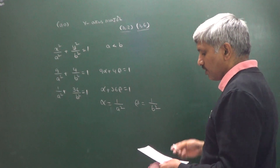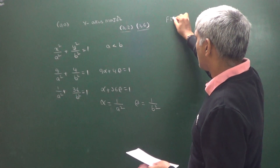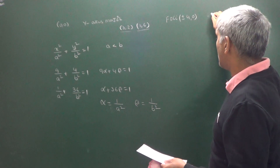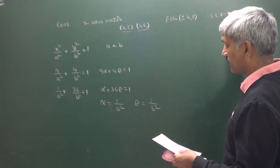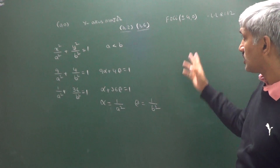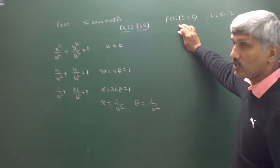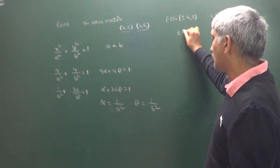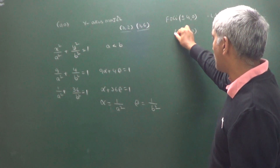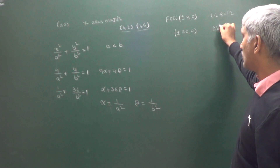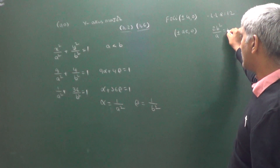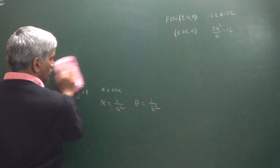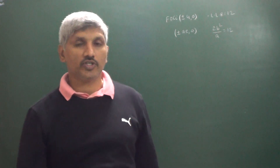The next question asks to find the equation of a hyperbola with foci at (±4, 0) and length of latus rectum equal to 12. The foci (±4, 0) compare with (±AE, 0), so AE = 4. For the first form of hyperbola, the length of latus rectum = 2B²/A = 12, giving B² = 6A.